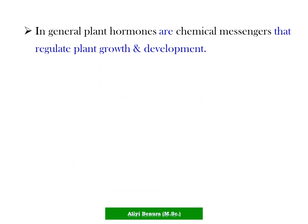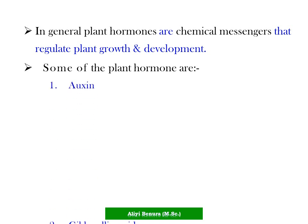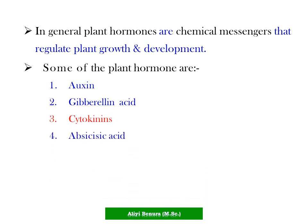In general, plant hormones are chemical messengers that regulate plant growth and development. The main plant hormones are: auxin, gibberellin, cytokinin, abscisic acid, and ethylene.